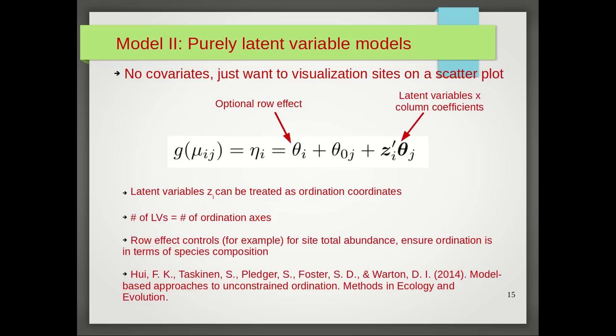Model 2 is a purely latent variable model. This is where we have no covariates and we just want to visualize the sites on a scatter plot. You can see that the xi βj is now replaced with zi θj, where zi are the latent variables and θj are the column coefficients related to the latent variables. The latent variables zi can be treated as ordination coordinates for each site or for each row in the response matrix. The number of latent variables is equal to number of ordination axes. If you fit a model with two latent variables, then after fitting the model you can plot the latent variables on a scatter plot to look for any potential site patterns.